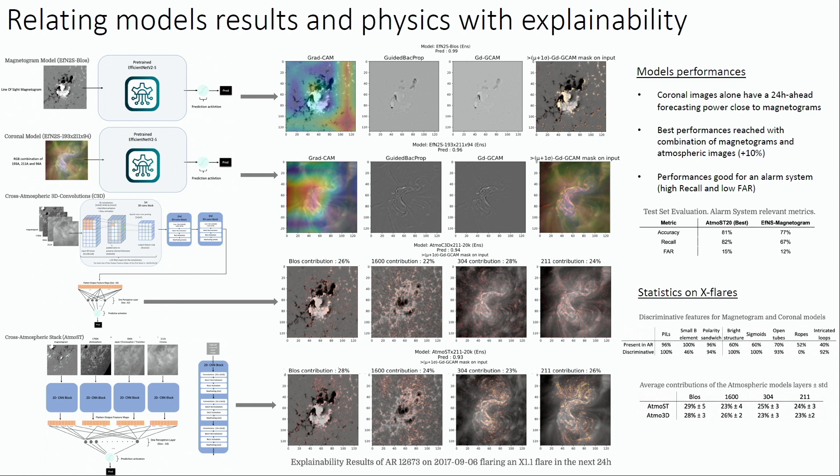And so now the explainability. We use guided grad cam, the combination of grad cam and guided backpropagation, which are very standard visualization methods for CNNs. The first column is the grad cam. It helps you to identify the most discriminative region of the input. The guided backprop allows you to visualize the pixel contribution of the input to the last convolutional layers.